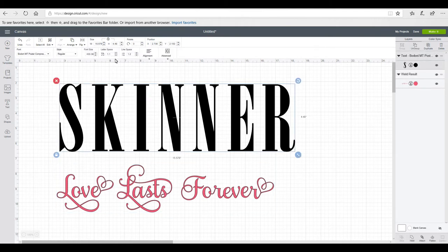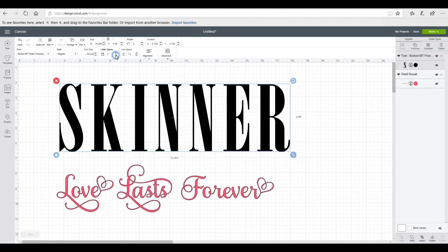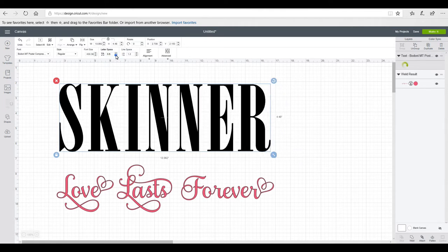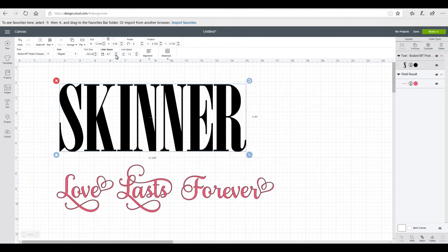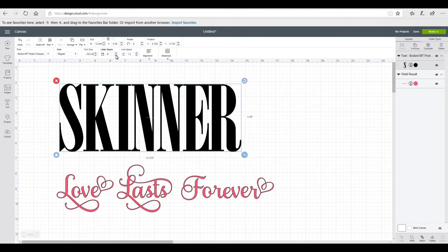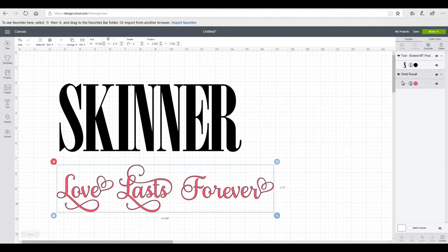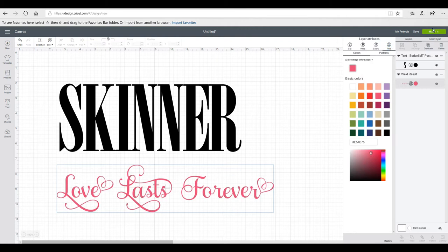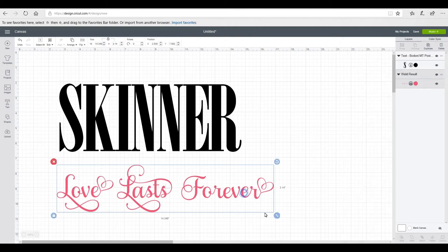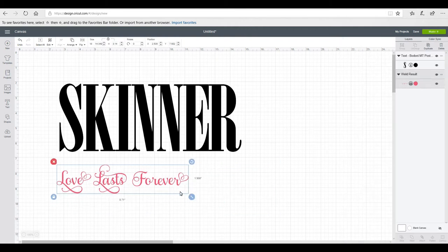So the first thing I want to do is reduce my letter spacing down, and I want them to be as close to each other as they can be without actually touching. With this one I need to change it to print and then I need to reduce it down because it obviously needs to be the size of print and cut.